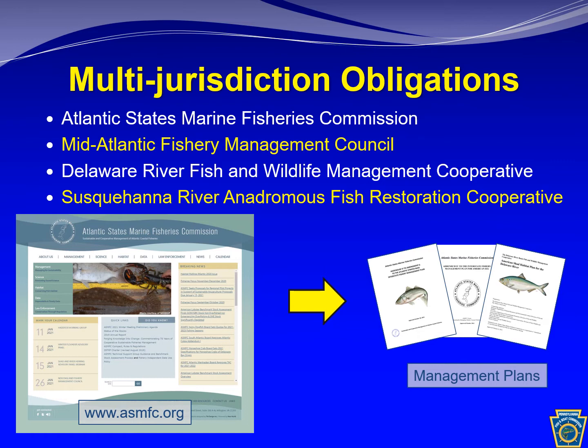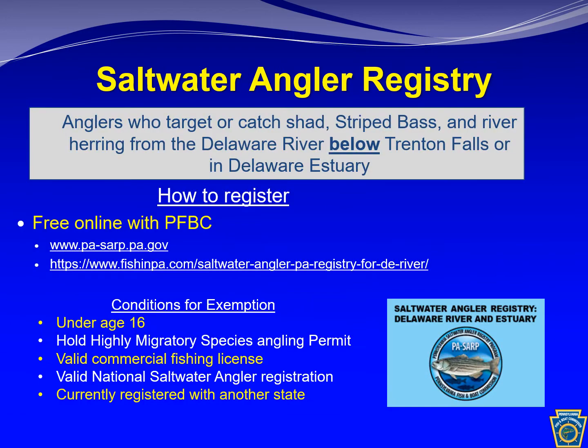The Fish and Boat Commission is a voting member in all of these organizations. Management processes typically originate with a stock assessment of a given species to determine population abundance and potential losses to the population, upon which decisions are made for ensuring their sustainability. These decisions are encapsulated in various species management plans. As part of the collaborative management for migratory fishes,